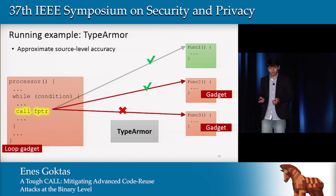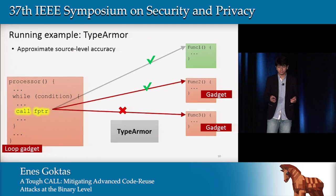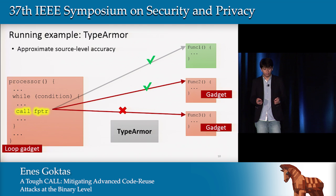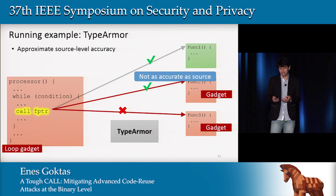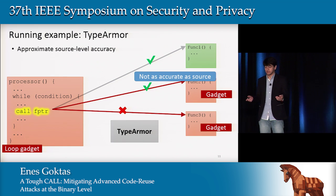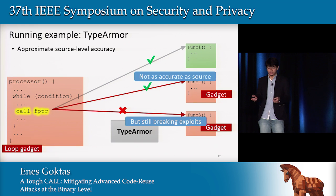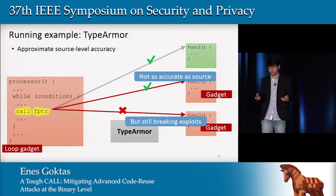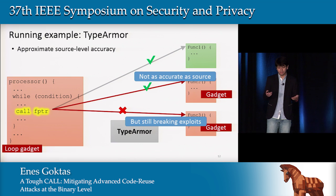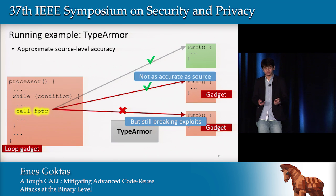So what is TypeArmor doing? TypeArmor tries to approximate the source-level accuracy — it tries to get close to the source-level available information. However, it is not as accurate as source, so it still allows certain unintended functions. But it does stop more than the current binary-level solutions — for example, it stops function 3. So we are somewhere in between the current state-of-the-art solutions and the source-level solutions.